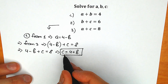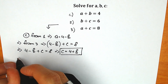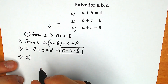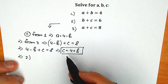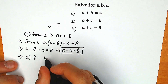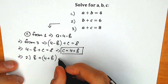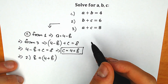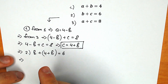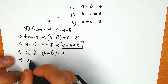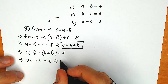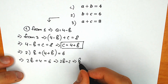The final step: let's substitute c equals 4 plus b into the second equation. So we write the second equation and plug in 4 plus b instead of c. We have b plus 4 plus b equals 6, which gives us 2b plus 4 equals 6. From here, 2b equals 2, so b equals 1.